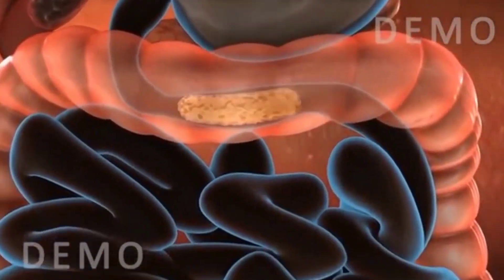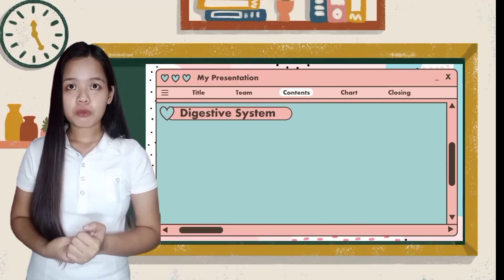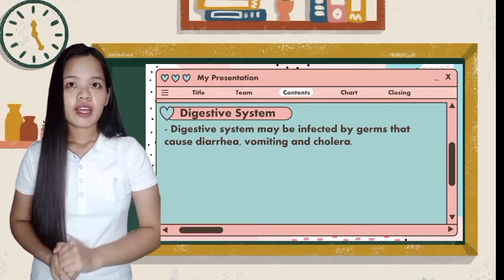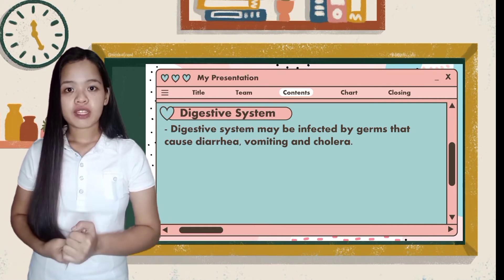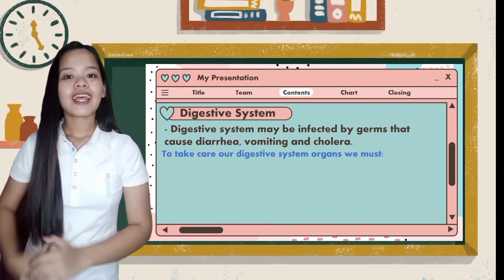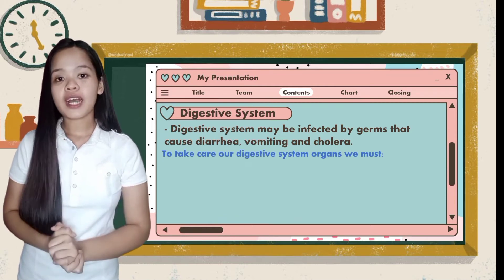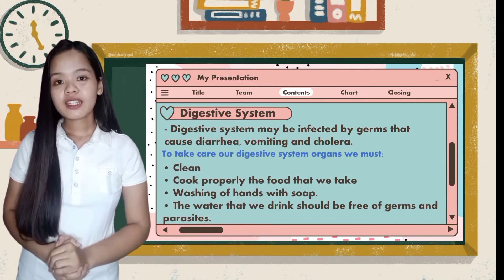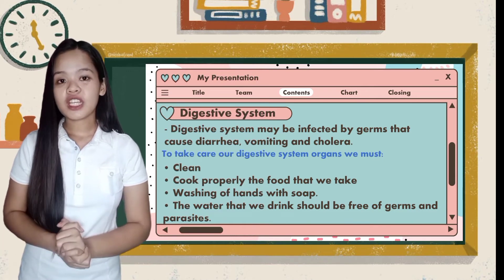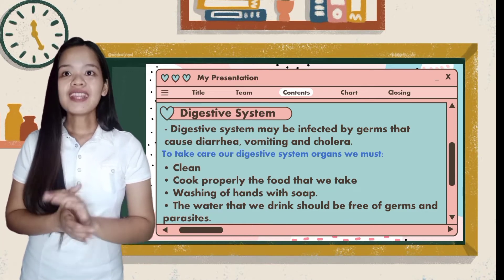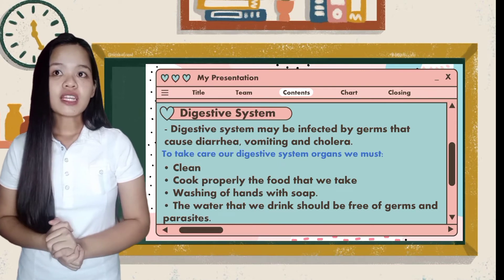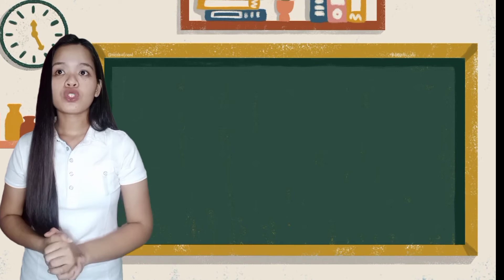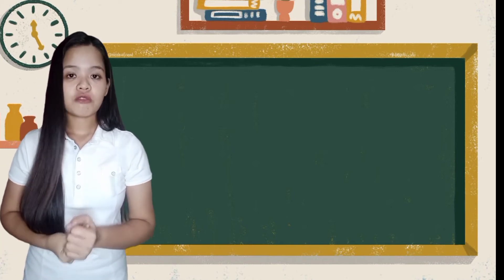Our digestive system may be infected by germs that cause diarrhea, vomiting, and cholera. To avoid infection, we must keep clean, cook food properly, wash our hands before eating with clean water and soap, and ensure the water we drink is free of germs and parasites. Remember all of those for you to have a healthy digestive system.